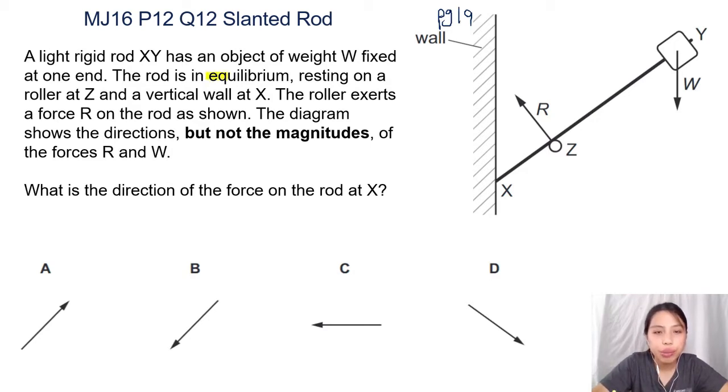Something to highlight: equilibrium, and the diagram shows the direction but not the magnitude of forces. What 'not the magnitude' means basically - the diagram is not to scale, so don't just look at the arrow and compare.